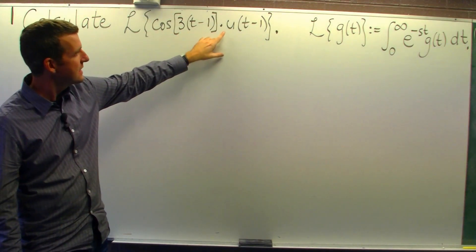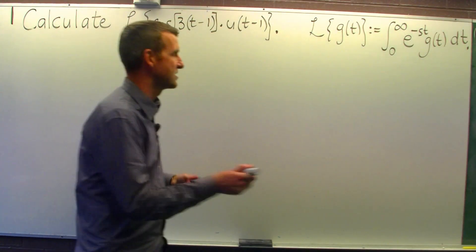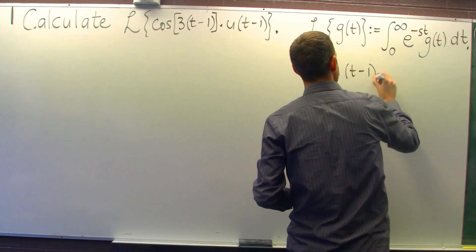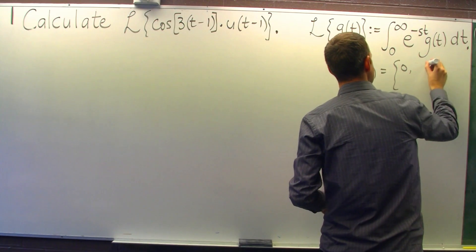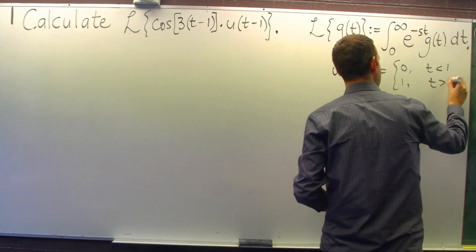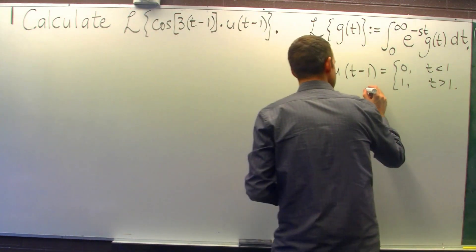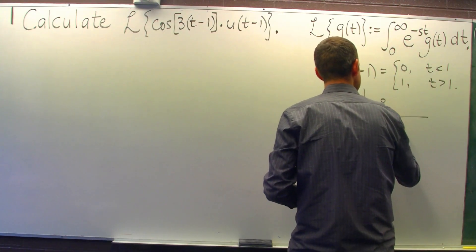Now this u is just known as a step function. So it's 0 for t less than 1 and it's 1 for t greater than 1. So the cross section looks a little bit like a step.